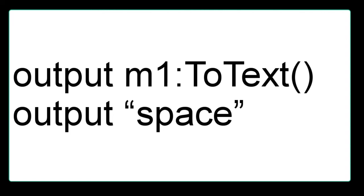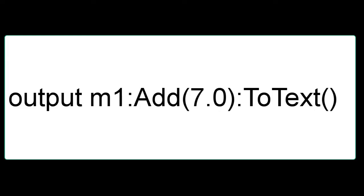Now add a value to each element of the matrix and output the result. Type: lowercase output, space, lowercase m, one, colon, capital A, lowercase d-d, parentheses, seven dot zero, close parentheses, colon, capital T, lowercase o, capital T, lowercase e-x-t, open parentheses, and close parentheses. Do the matrices look as you expected?